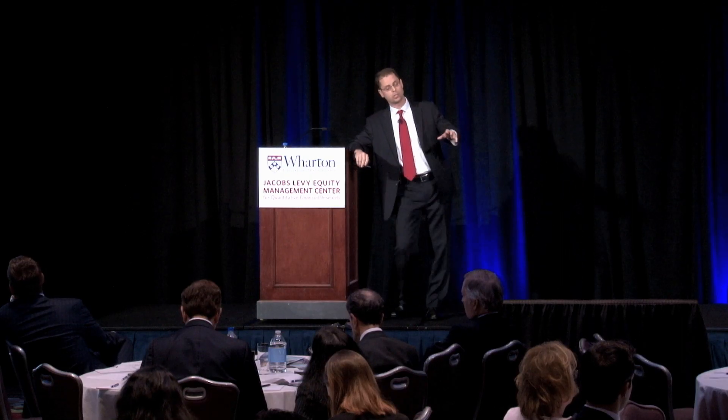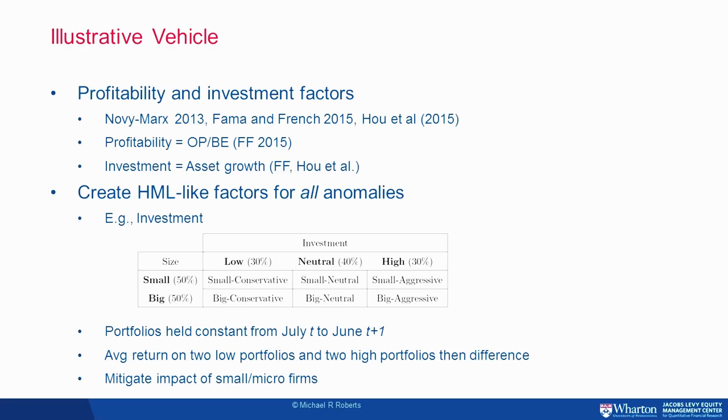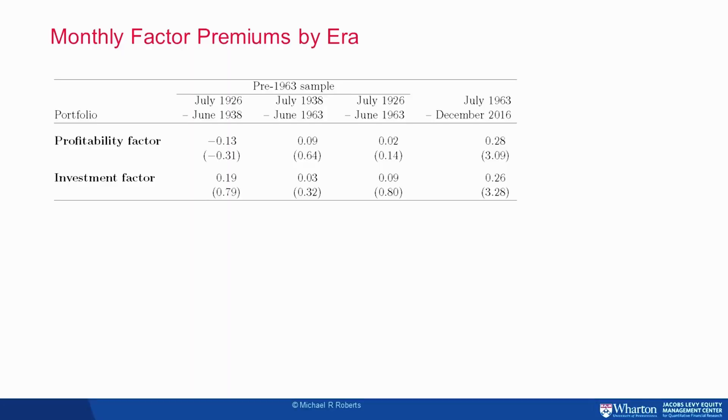Let me use profitability and investment factors as an illustrative vehicle before generalizing to the other 34 anomalies. Throughout most of the paper we create HML-like factors — following Fama-French 1993. For investment, we form six portfolios and a high-minus-low investment factor: a long-short portfolio along the high and low dimensions averaged across size. The reason we focus on this is primarily to mitigate concerns about small-cap and micro-cap firms dominating our results.